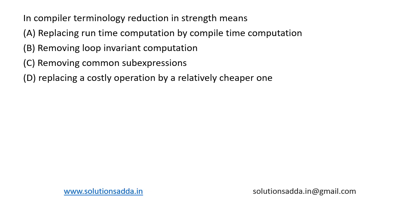This is a question from compiler design. In compiler technology, reduction in strength means replacing runtime computation by compile-time computation, removing loop-invariant computation, removing common sub-expressions, and replacing a costly operation by a relatively cheaper one. So option D — replacing a costly operation by a relatively cheaper one — is called strength reduction.